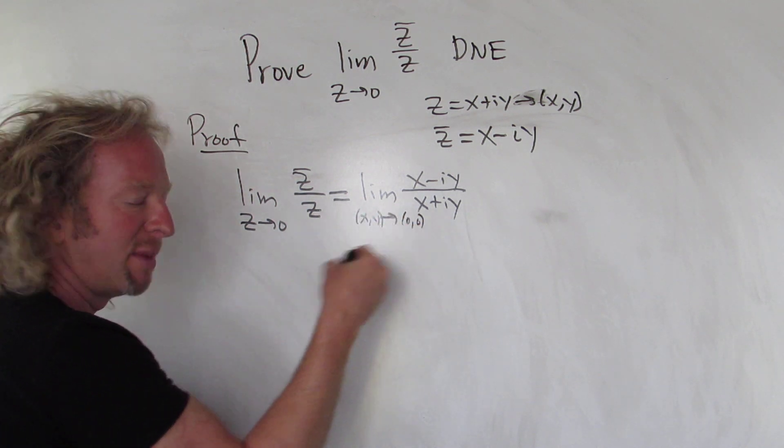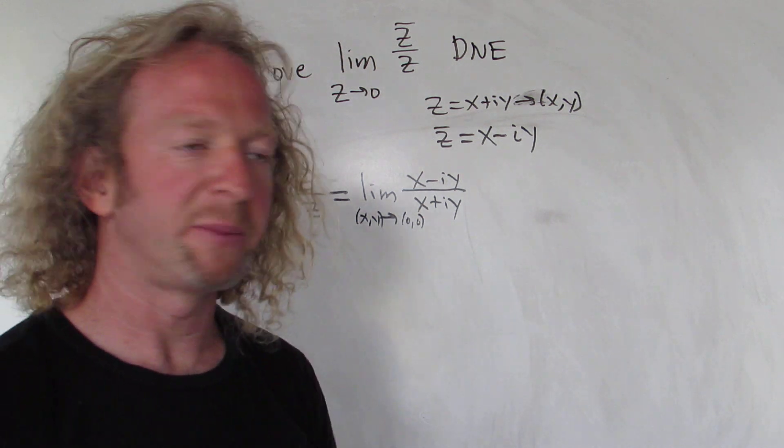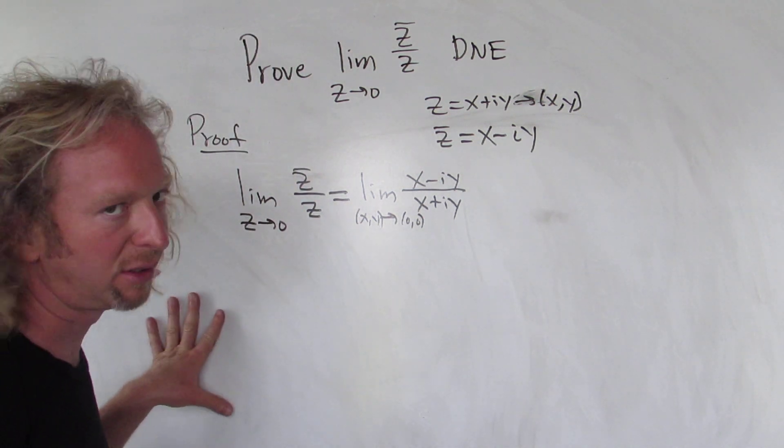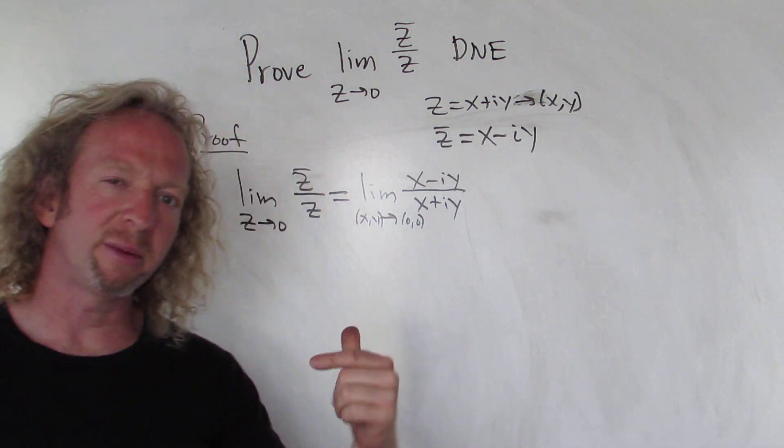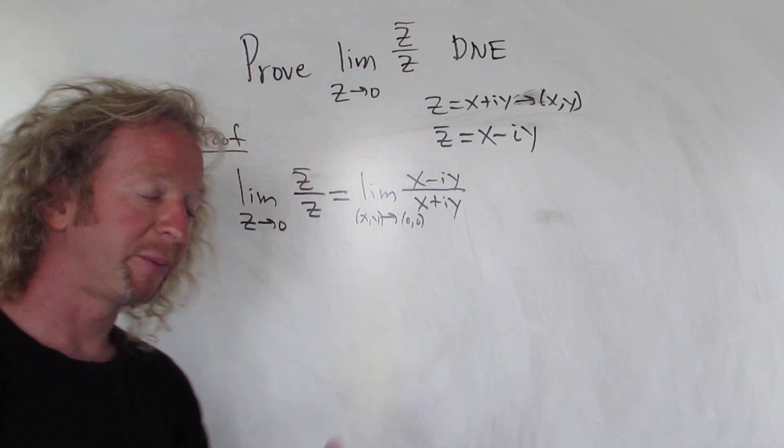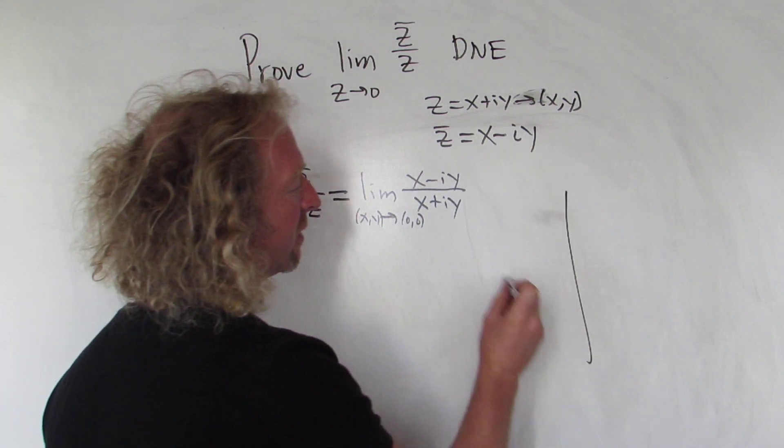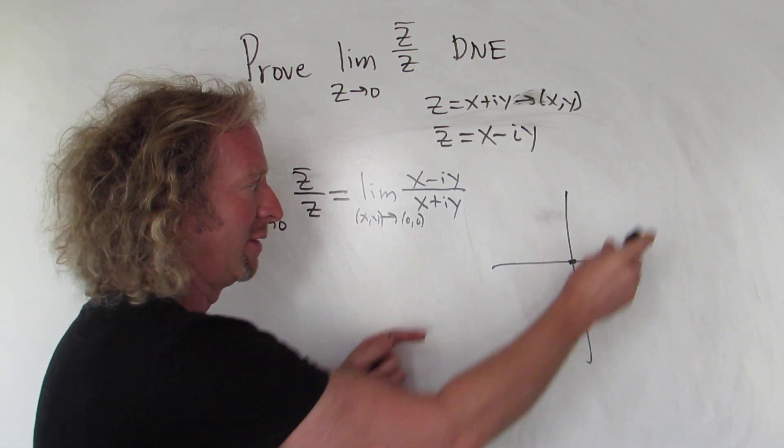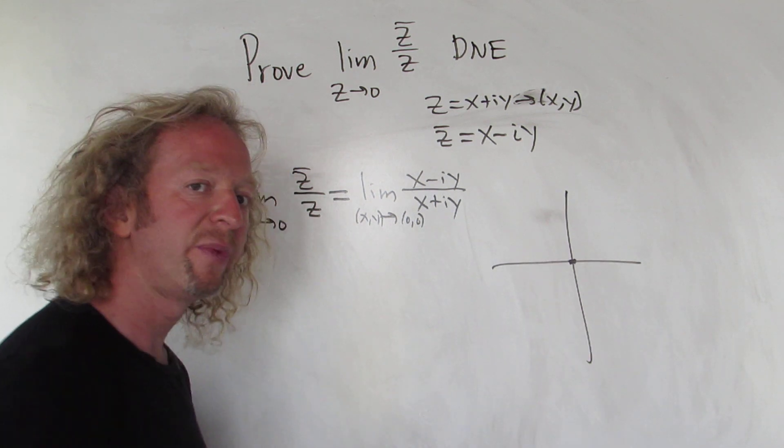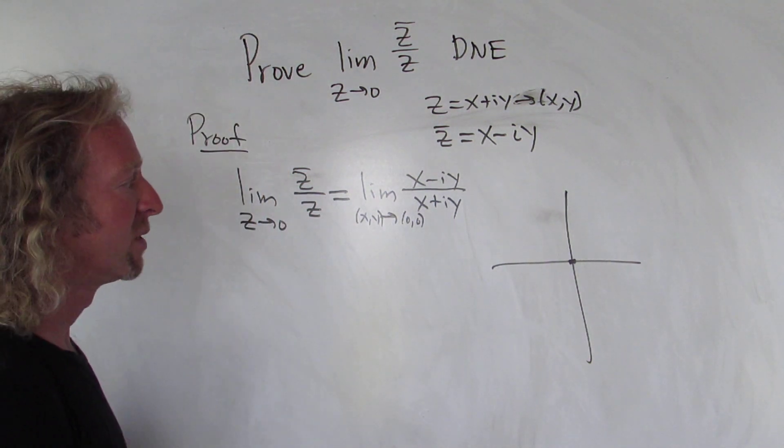Actually, let me go ahead and write z here as an ordered pair. So let's write it as (x,y), let's replace the zero with (0,0). When you're taking a limit in the complex plane it's different from real numbers. For real numbers the limit has to exist from the left and from the right. In the complex plane this limit has to exist from all directions. We have to be able to approach zero from any direction and get the same answer.